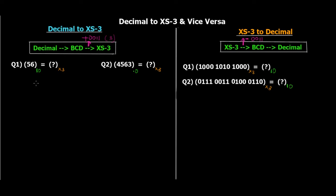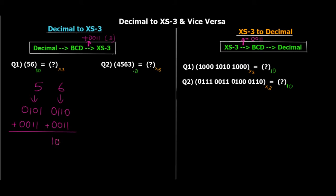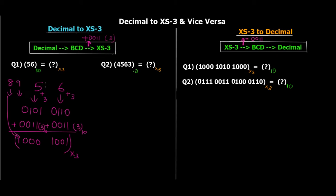Let's convert decimal 56 to XS3. Step 1 — represent each digit with its 4-bit BCD: 6 is 0110, 5 is 0101. Step 2 — add 0011 to each four-bit block. For 6: 0110 plus 0011 gives 1001 (that's 9). For 5: 0101 plus 0011 gives 1000 (that's 8). So the XS3 code for decimal 56 is 1000 1001. You can alternatively think of it as directly adding 3 to each digit: 5+3=8 and 6+3=9, then converting those to binary.